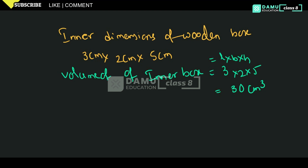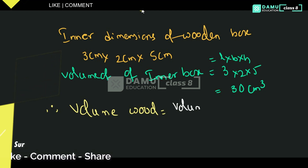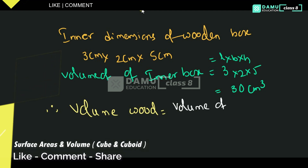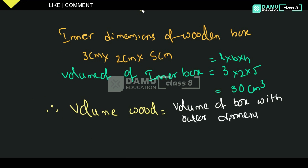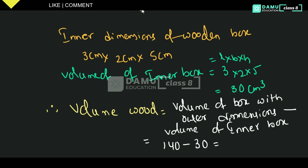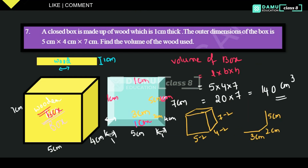Therefore, the volume of wood used equals volume of outer box minus volume of inner box. That is 140 minus 30, which gives us 110 centimeters cube. So the volume of the required wood will be 110 centimeters cube.